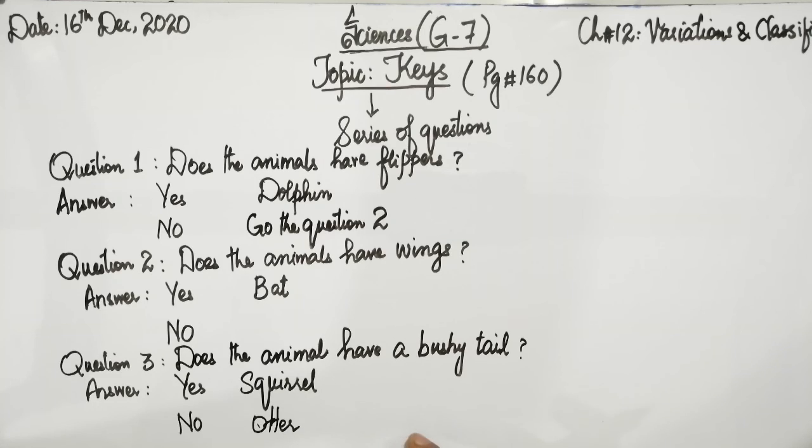So this is a simple key to represent, to identify different organisms, not only by their name but also by their characteristics. Thank you class.